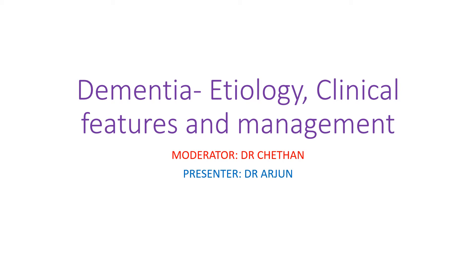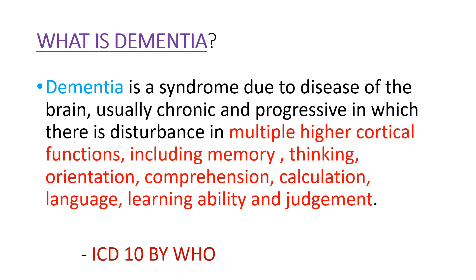Good morning. Today my topic is Dementia — etiology, clinical features and management, and my moderator is Chetan sir. So today we will start with what is dementia. Dementia is a clinical syndrome due to disease of the brain, usually chronic and progressive, in which there is a disturbance in multiple higher cortical functions including memory, thinking and orientation, comprehension, calculation, language, learning ability and judgment. This is by the ICD-10 by WHO, the definition of dementia.